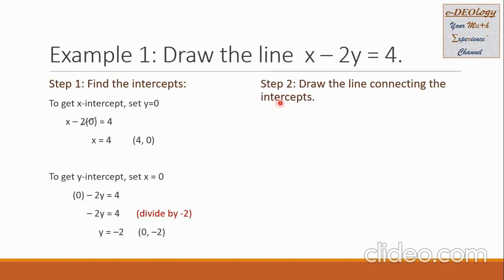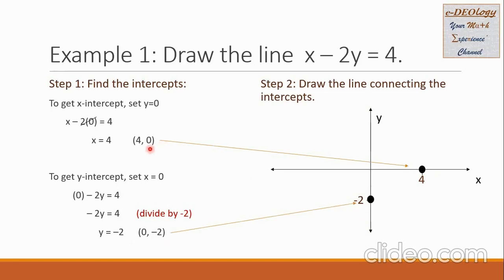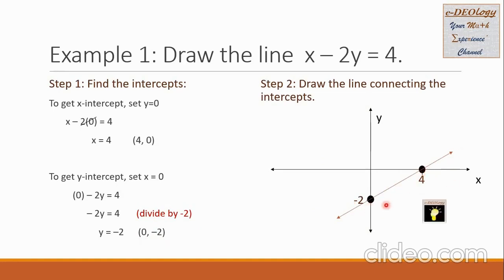The y-intercept has an ordered pair of (0, negative 2). Then we go to step 2: draw the line connecting the intercepts. Let us draw our rectangular coordinate system, the x and y-axis. On the x-axis, let us locate positive 4 on the right side. On the y-axis, let us locate negative 2, which is down here. Then we connect the intercepts and this is our required line.